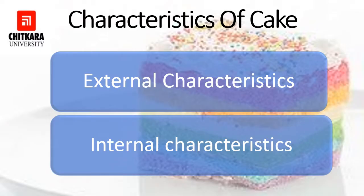Characteristics of cake — generally when we discuss about the characteristics of cake, we are discussing the texture, the inner layer, the quality, the quality of your crust, volume, grain, color, crumb, aroma, and taste. All these are the characteristics of your cake, but they are generally divided into two categories.